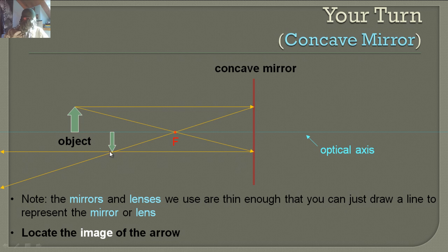Where these two lines converge is where the tip of the new image will be. The tip is now pointing down and it's smaller. Is this a real or virtual image? It's on the same side as the object, so therefore it is a real image.